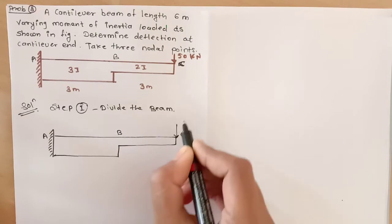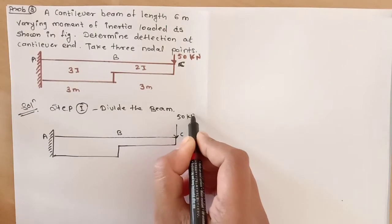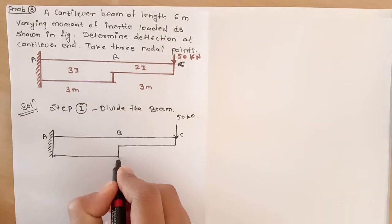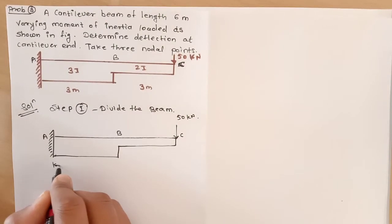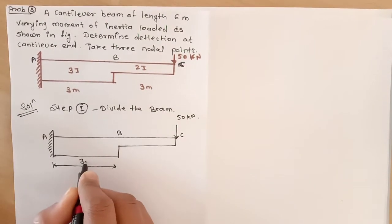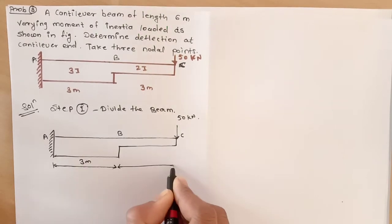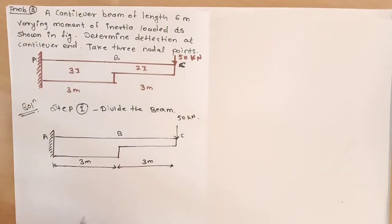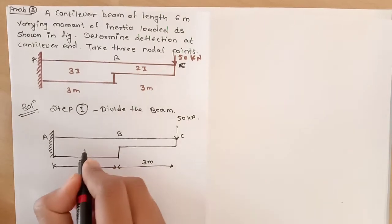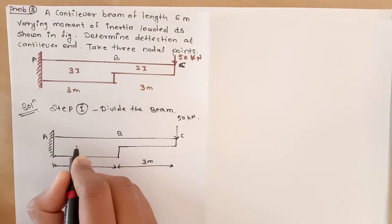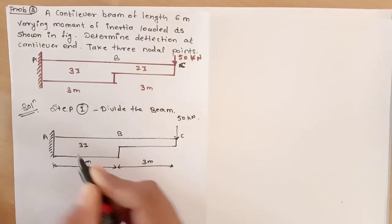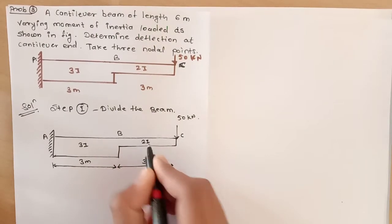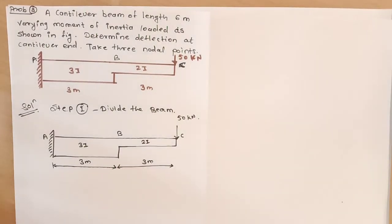At point C, a 50 kN point load is applied. The span from A to B is 3 meters, and from B to C is 3 meters. The moment of inertia values are given: over the AB portion, I is 3I, and over the BC portion, I value is 2I.